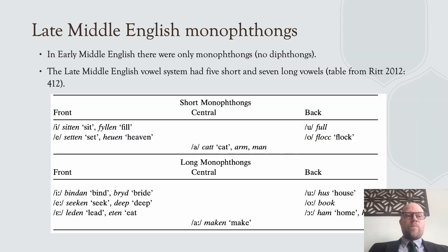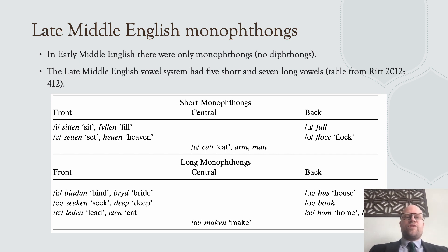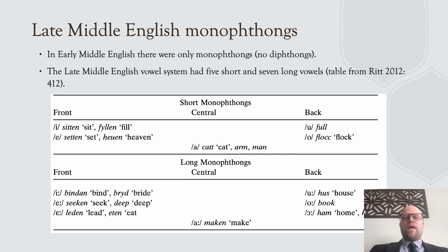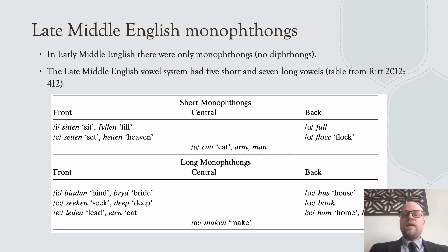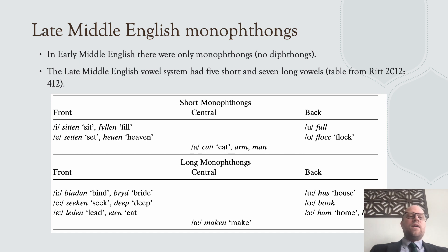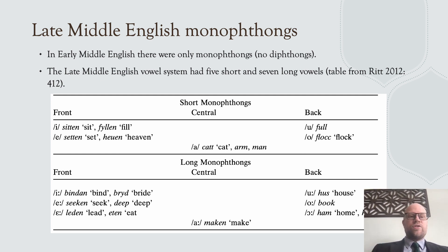In order to understand the great vowel shift, we first need to understand something about late Middle English vowels. In Old English, there were only monophthongs, which also carried on into early Middle English. A monophthong is simply a single vowel — 'mono' meaning one — whereas a diphthong involves more than one vowel. Let's look at the monophthongs in late Middle English.